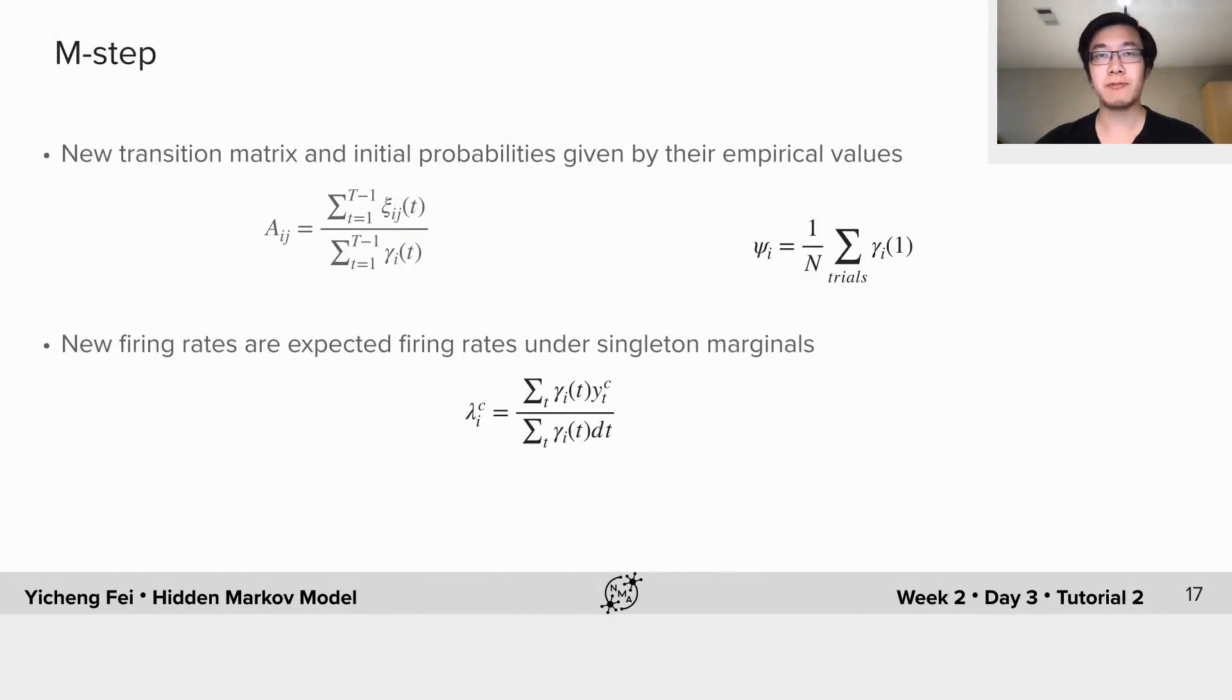The M-step of the hidden Markov model can be calculated analytically in closed form. Let's have a look. First, the new transition matrix A and initial probabilities ψ are given by their empirical values from data. For example, the new transition probability from state i to state j is the number of times that state i switches to state j inferred from data and normalized by the total time spent in state i.